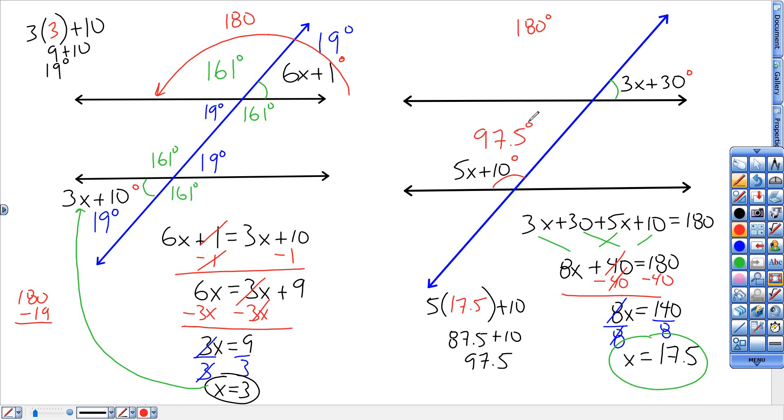If I want to find that other angle next to it, I could take 97.5 away from 180 to get that angle, which would have to be 82.5 because 82.5 and 97.5 give me 180. Or I could take that 17.5, plug it in for x and do the math for that one, which gives me 52.5 plus 30 is 82.5. Another way to get that, either by plugging in or by taking what you got away from 180. That's another way to get that 82.5.